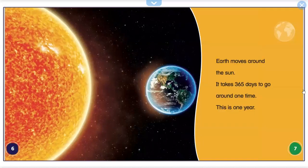Earth moves around the sun. It takes 365 days to go around one time. This is one year.